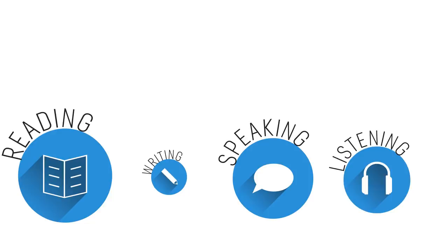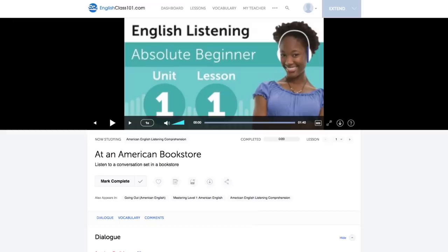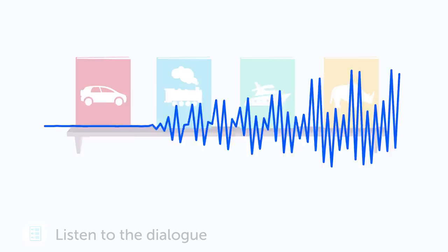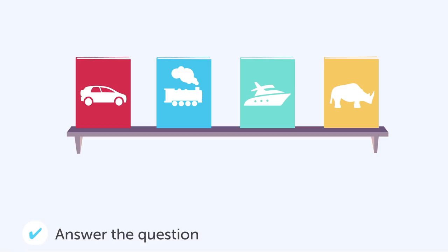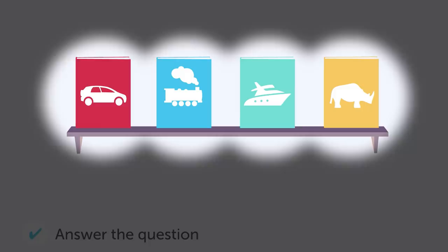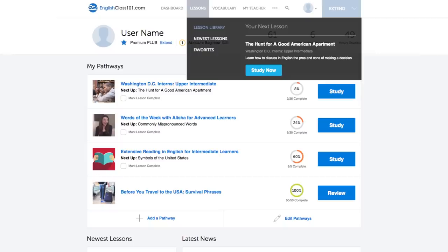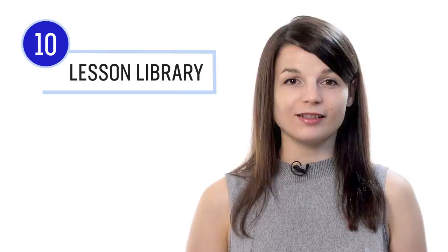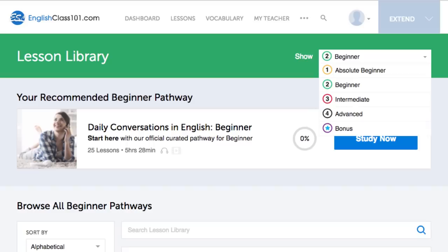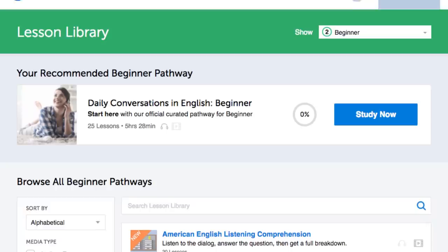Number eight: get listening assignments from your Premium Plus teacher covering reading, writing, speaking, and listening — tailored to your goals and needs, with a new one every week. Number nine: take the listening comprehension lessons, designed to test your listening skills. You'll hear a dialogue in the target language and be asked to answer a question to check if you understood. Number ten: get even more lessons in the lesson library, from absolute beginner to advanced, to help you master all areas of the language, including listening.